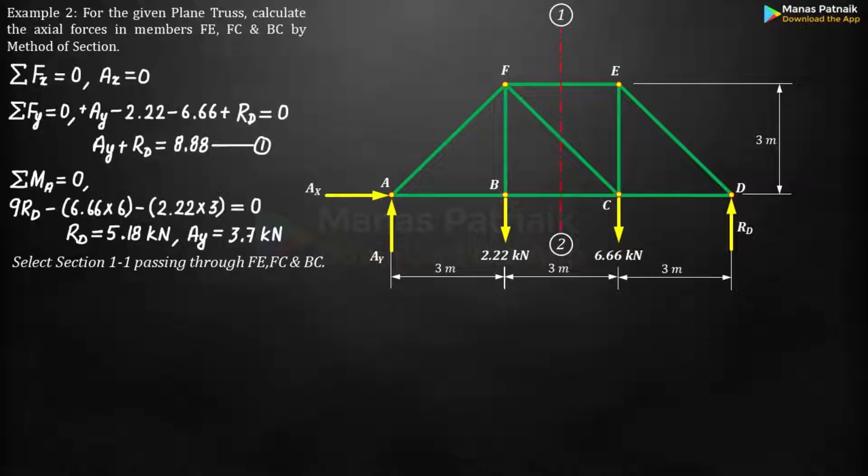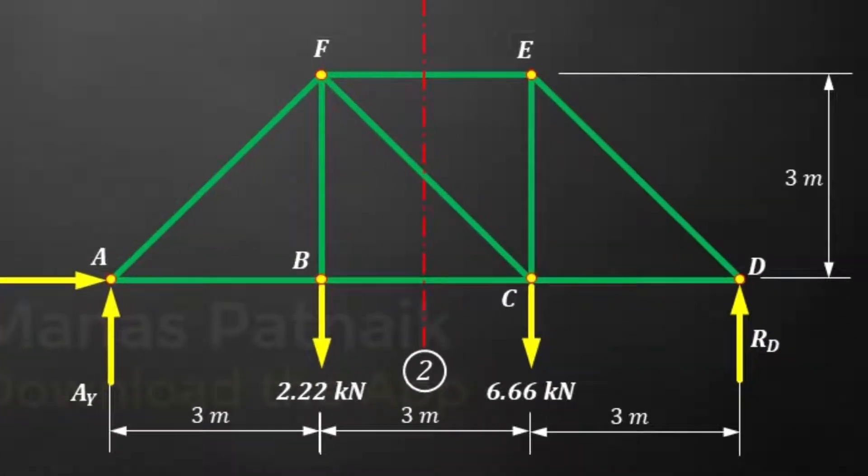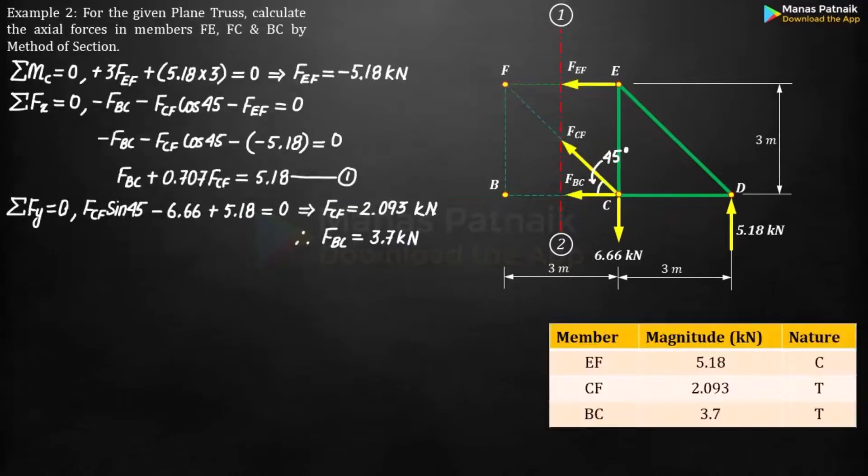The core idea is to cut through a truss by a section. This section should include no more than three members. Draw a free body diagram of the isolated portion of the truss. Apply the equations of equilibrium to determine the forces acting on the members of the section. And that's done.